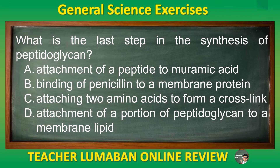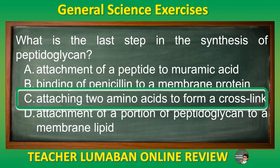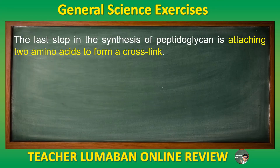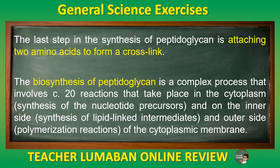The correct answer is Letter C: Attaching two amino acids to form a cross-link. The last step in the synthesis of peptidoglycan is attaching two amino acids to form a cross-link. The biosynthesis of peptidoglycan is a complex process that involves C20 reactions taking place in the cytoplasm — synthesis of nucleotide precursors on the inner side, synthesis of lipid-linked intermediates, and polymerization reactions on the outer side of the cytoplasmic membrane.